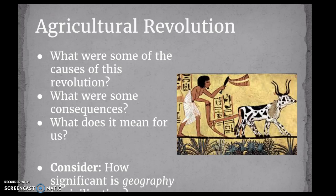Last week you guys looked at the agricultural revolution. Hopefully you were able to pick out some of the causes and consequences. One of the big consequences was urbanization, and along with urbanization comes a lot of positives, but unfortunately a lot of negatives as well, things like slavery. Definitely the development of permanence is very significant, and we're going to be looking at that throughout the unit on Mesopotamia.